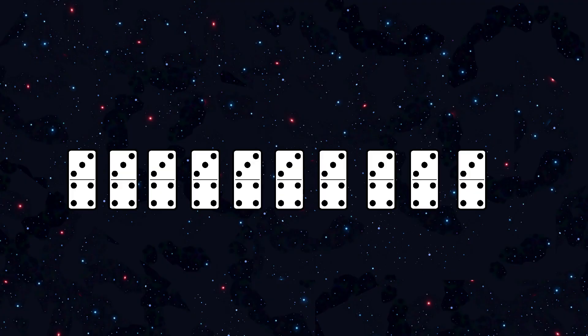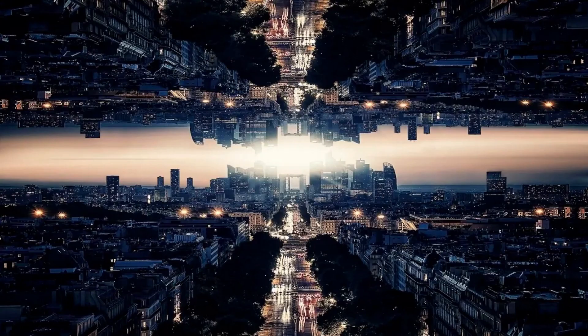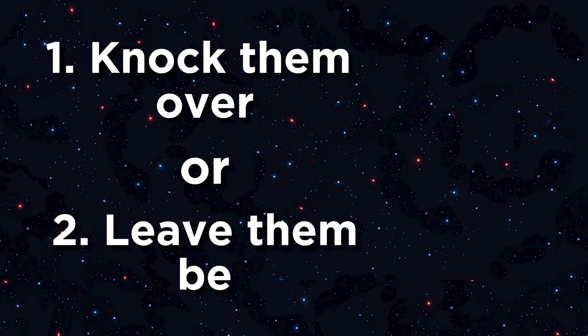This interpretation basically states that all possible outcomes of a situation actually happen simultaneously in different parallel universes. Imagine you have a set of 10 dominoes, you are given the choice to either knock them over or to leave them be. According to the many worlds interpretation, whichever choice you make doesn't really matter because there will always exist a universe where each different option is chosen.